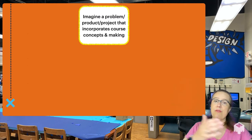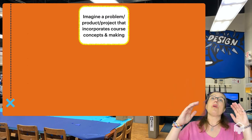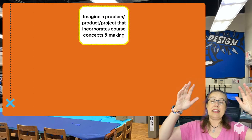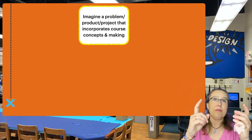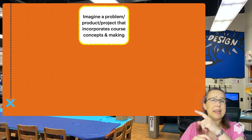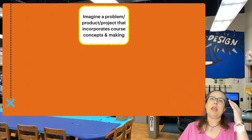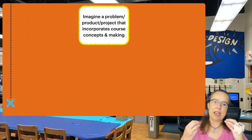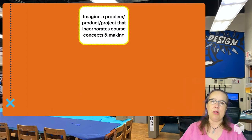Following our four earlier steps for the guidelines, we're first going to start with the idea of you having an idea of what your course objectives are in general. But imagine a problem, project, or product that incorporates course concepts and making. Start out with some good old school brainstorming.